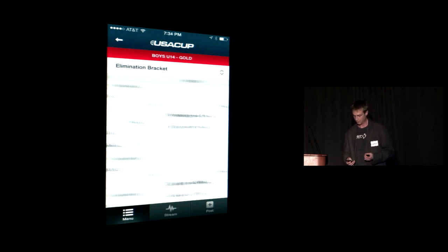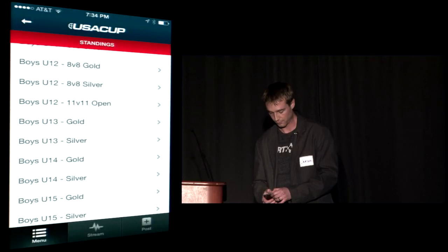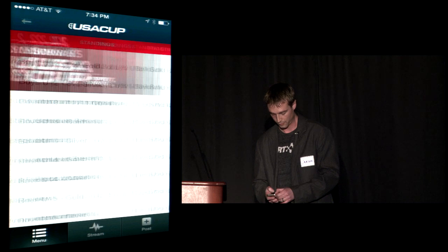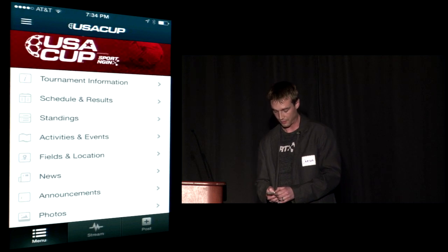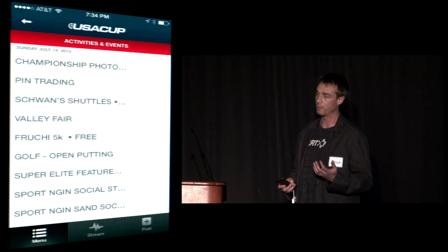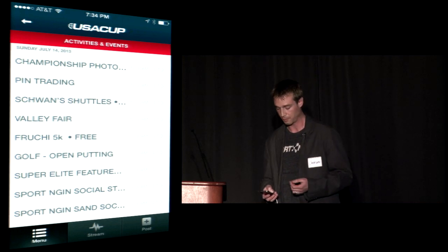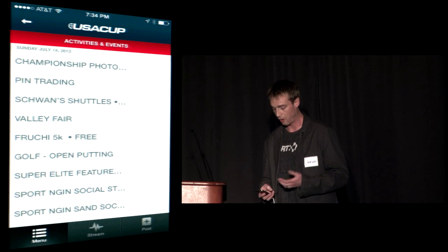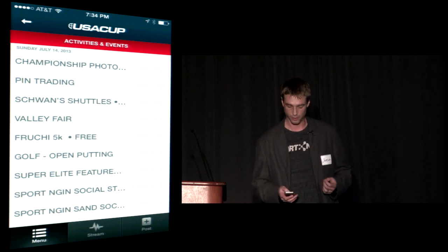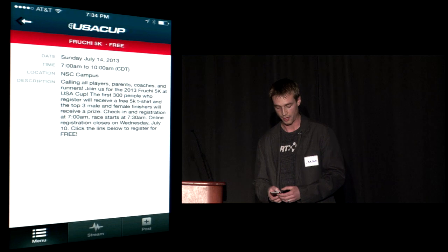Brackets show how teams advance and the results as well. Activities and events covers things that people are doing when they're not actually participating in the games themselves. For Schwann's USA Cup, they had events like fun runs, golf outings, and all sorts of things for the kids and for the fans to take part in every day of the event.